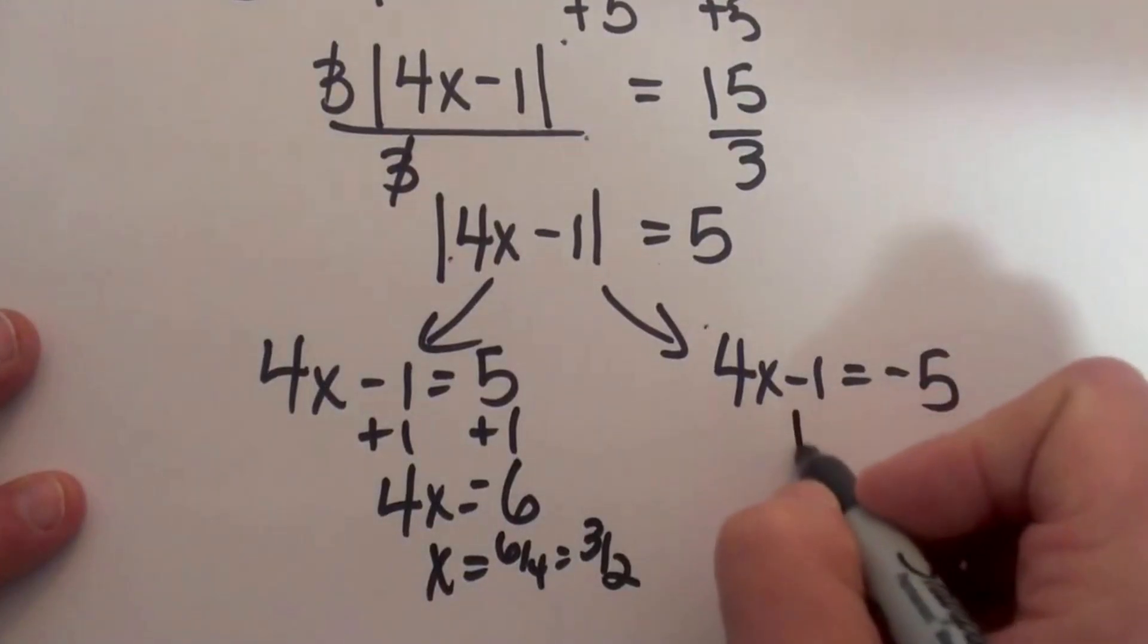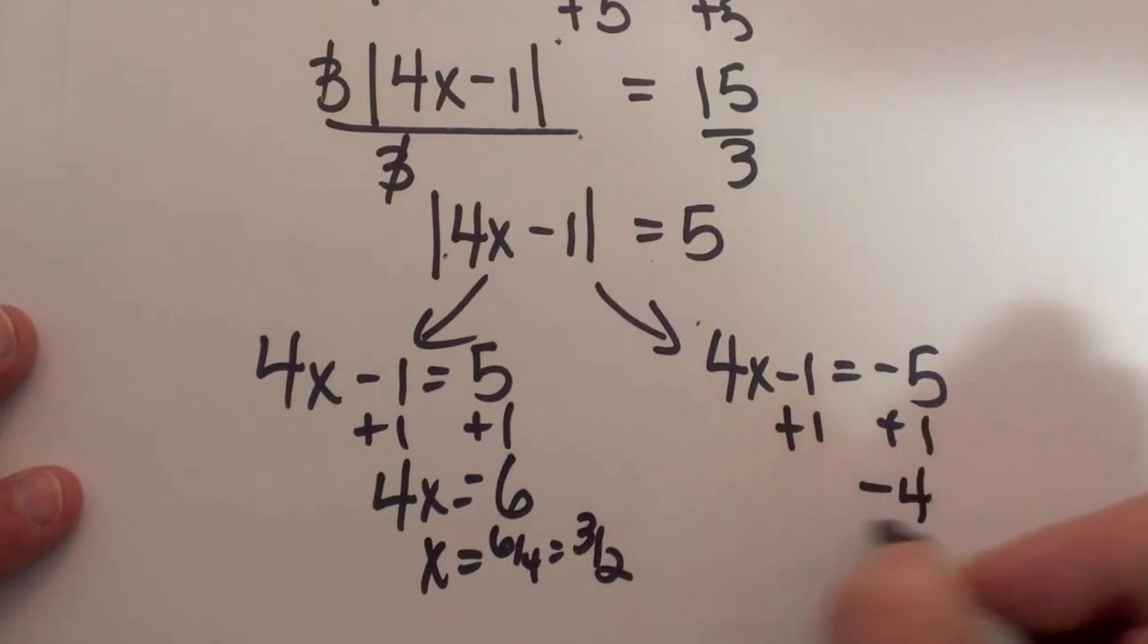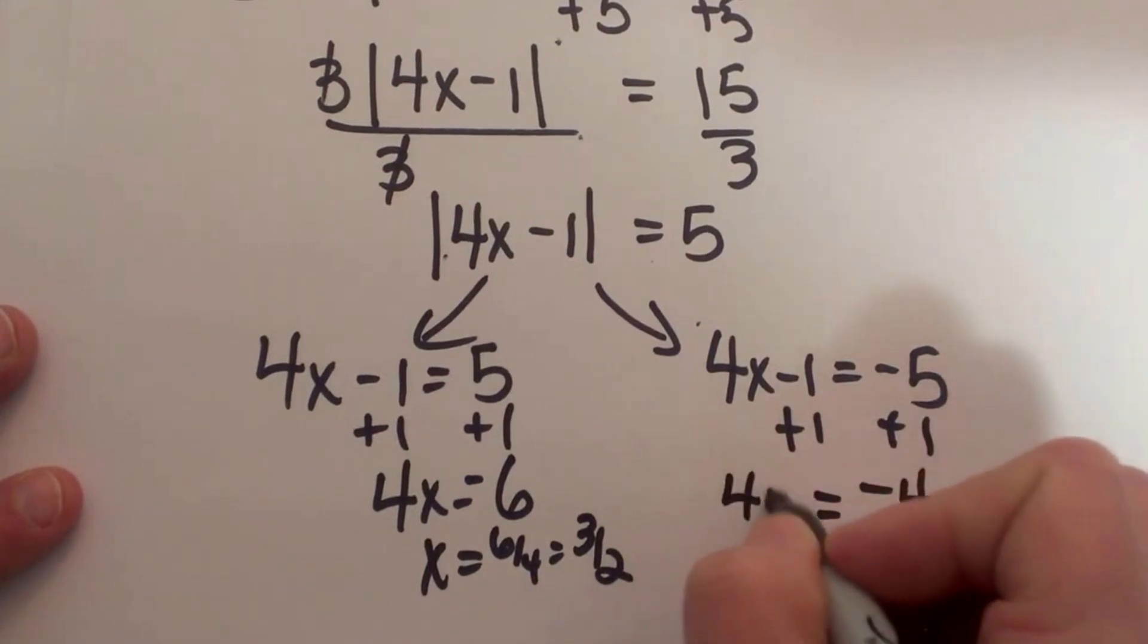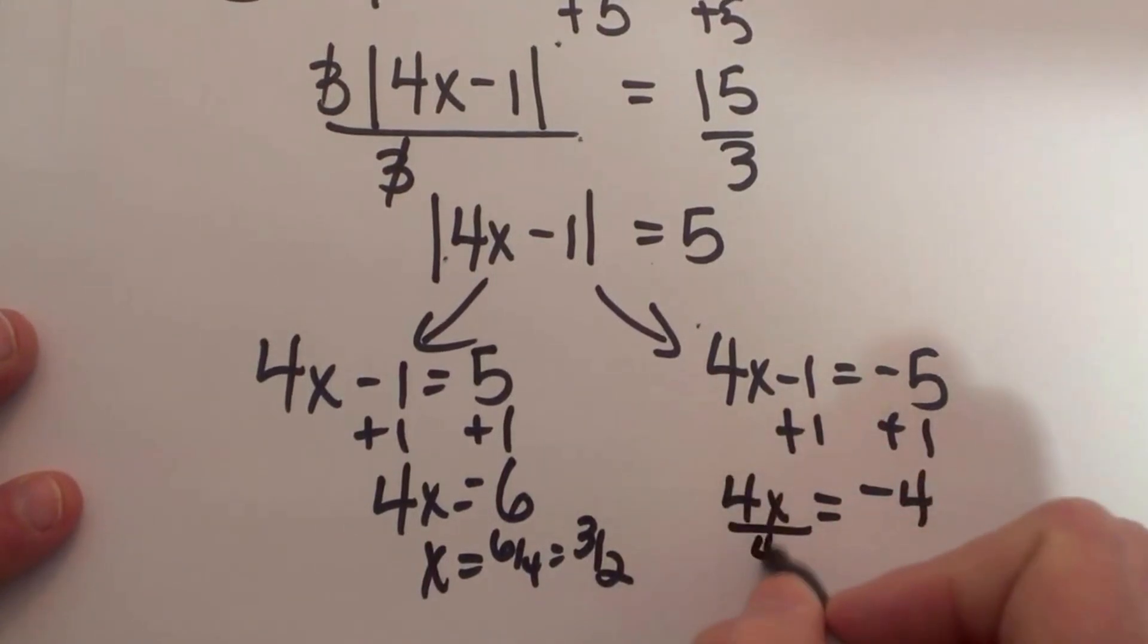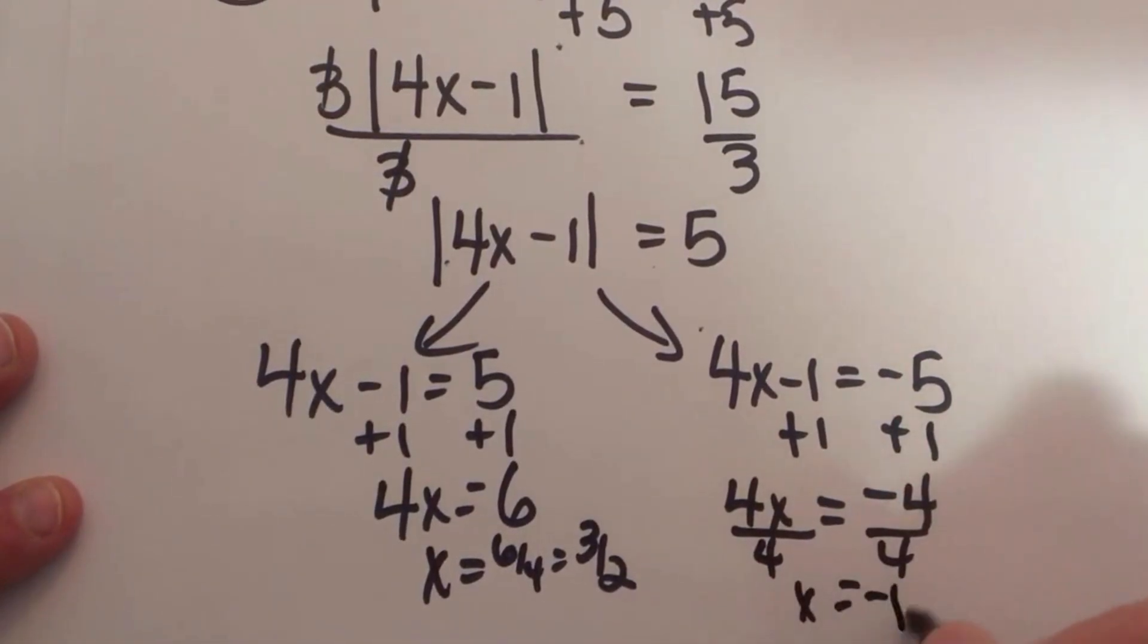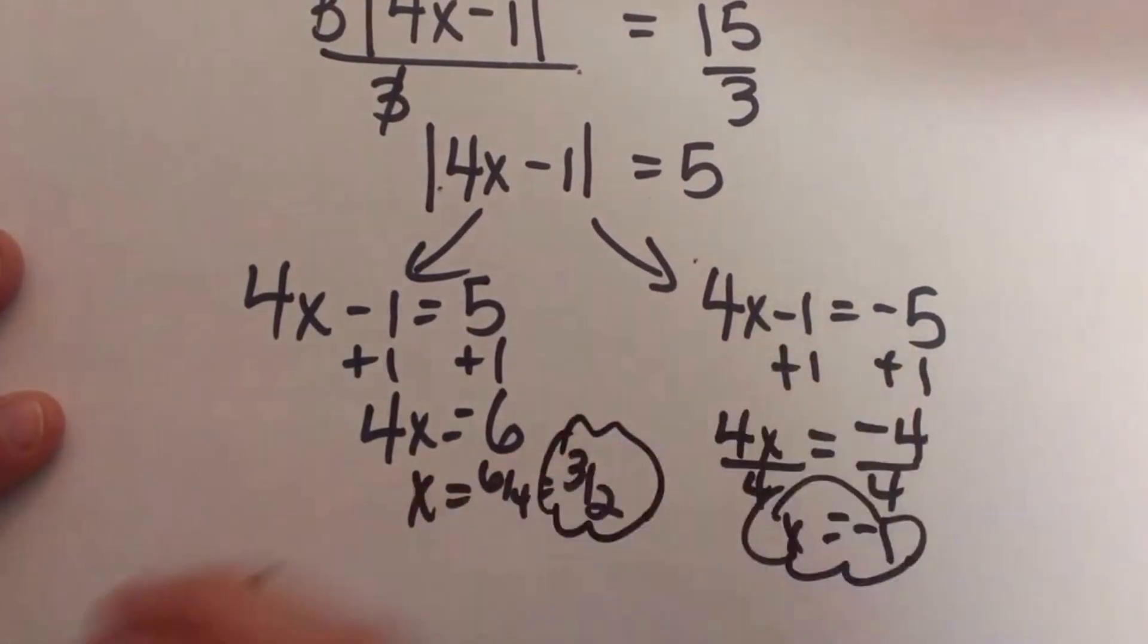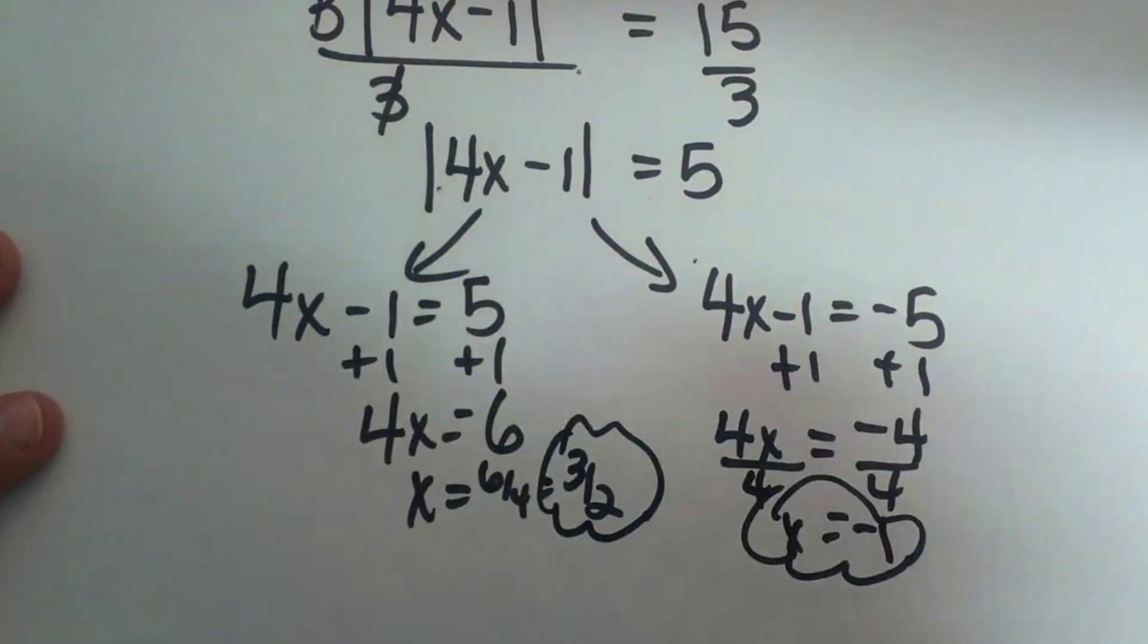Over here we are going to add 1, but this time we are adding it to the negative, so we get negative 4 is equal to 4x. Divide both sides by positive 4, so x is equal to negative 1. So we have two solutions: negative 1 and 3 halves. I hope this video is helpful.